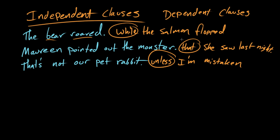why this is called the dependent clause. Because by the context of this sentence, while the salmon flopped, something else was going on, right? This is kind of like background information.